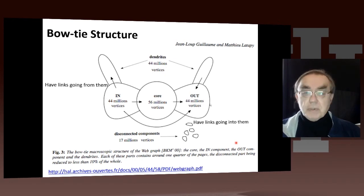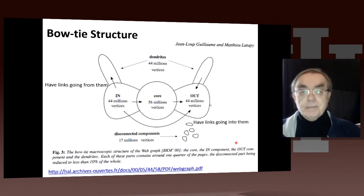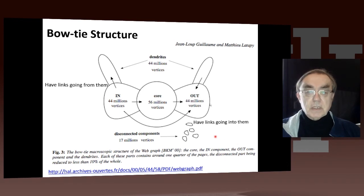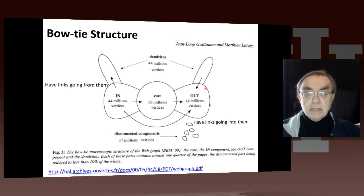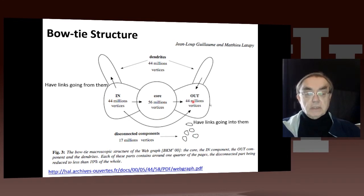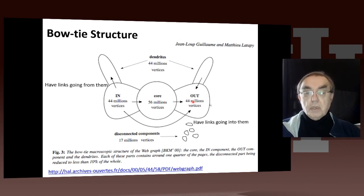Here we have a bunch of vertices with links going into them, a bunch with links going out of them, and a sort of homogeneous core with links going in and out. We have things sticking out — dendrites — with 44 million pages here, and then disconnected components with 17 million. This is the so-called bow-tie structure: a central core, in and out sections. There's about a quarter of the web in each of the various parts — the in, the core, the out, and the rest. It's easy to make an isolated clump: put up ten web pages pointing to each other without telling anyone, and you'll have an isolated subset.